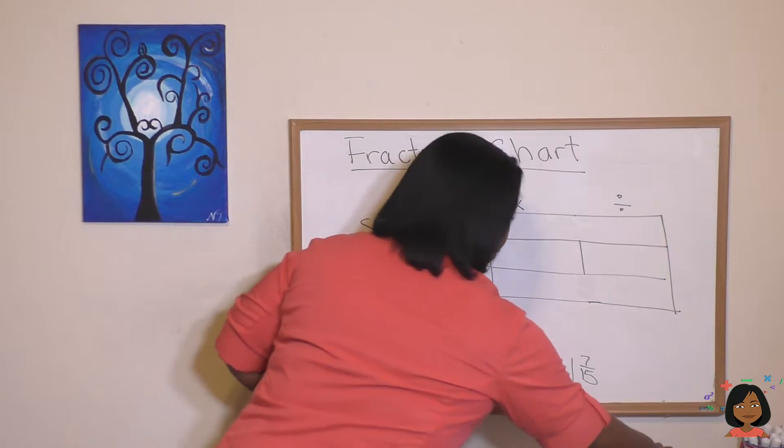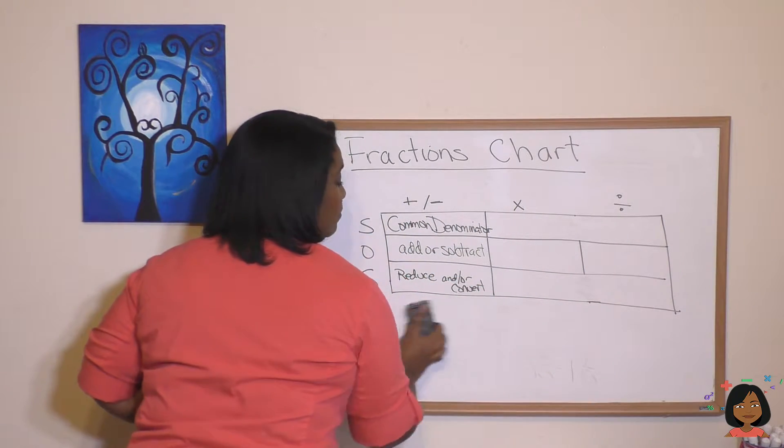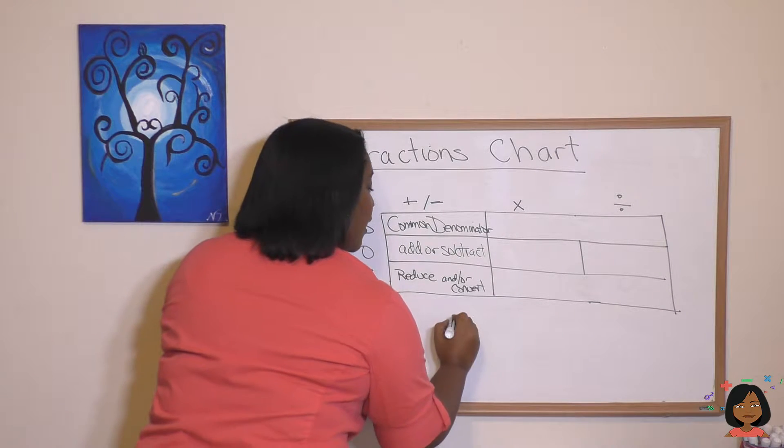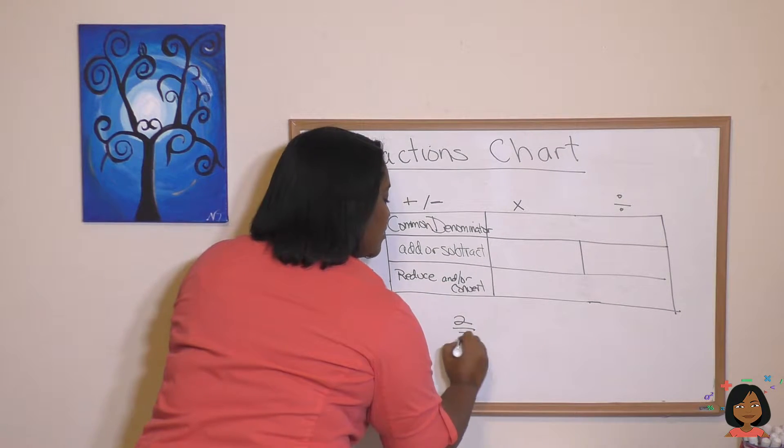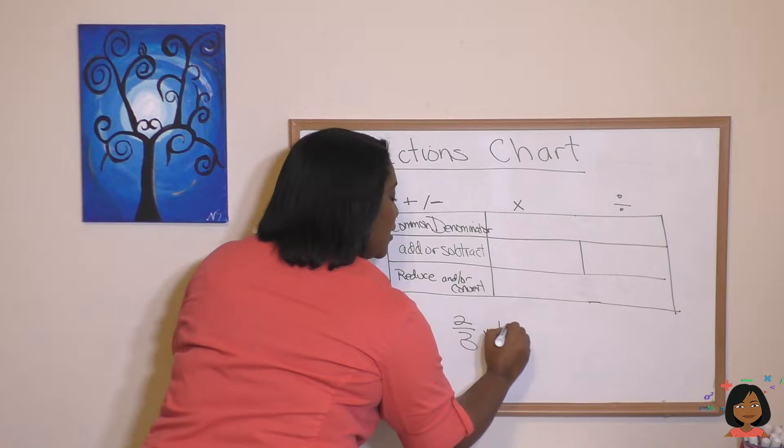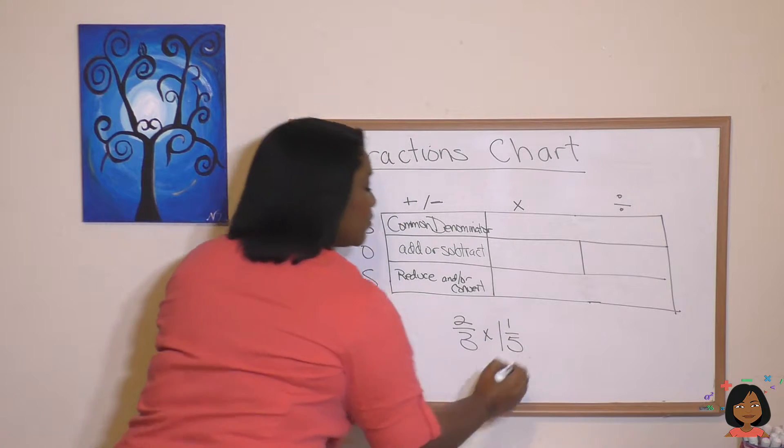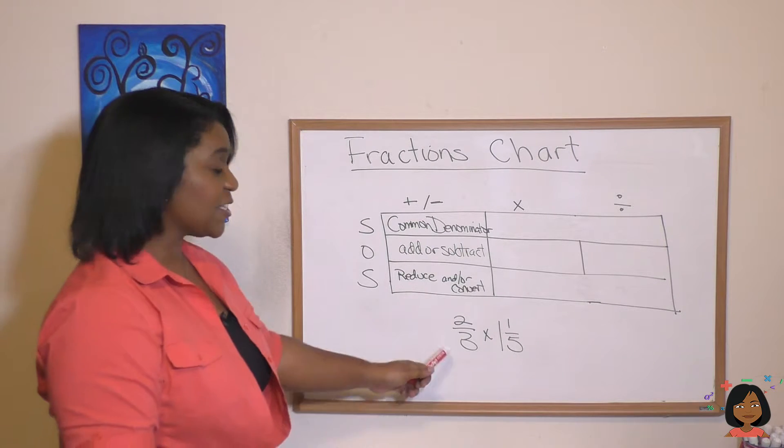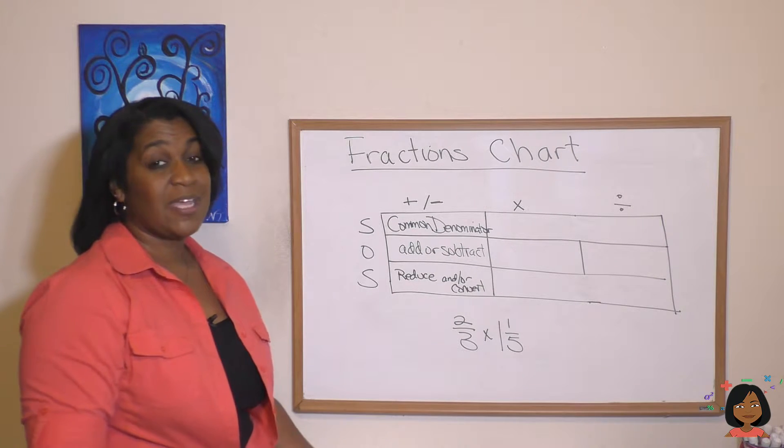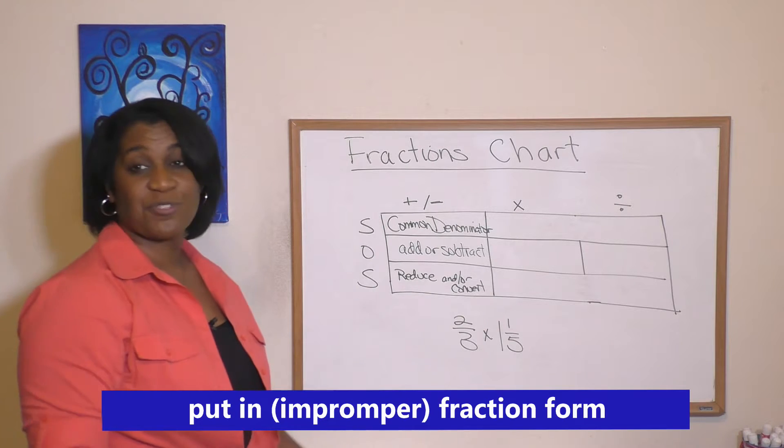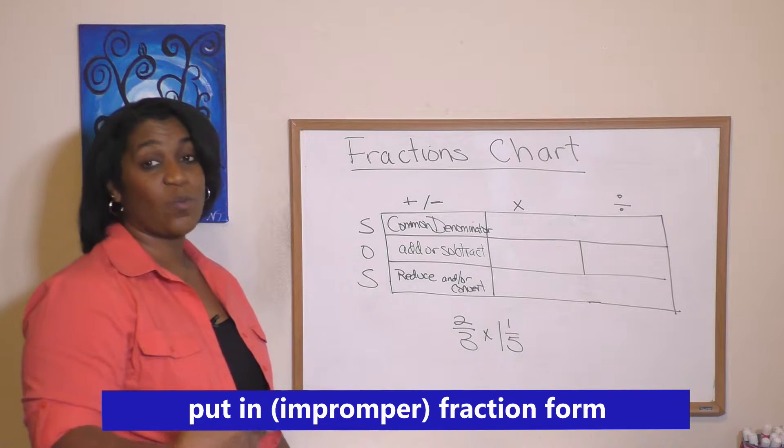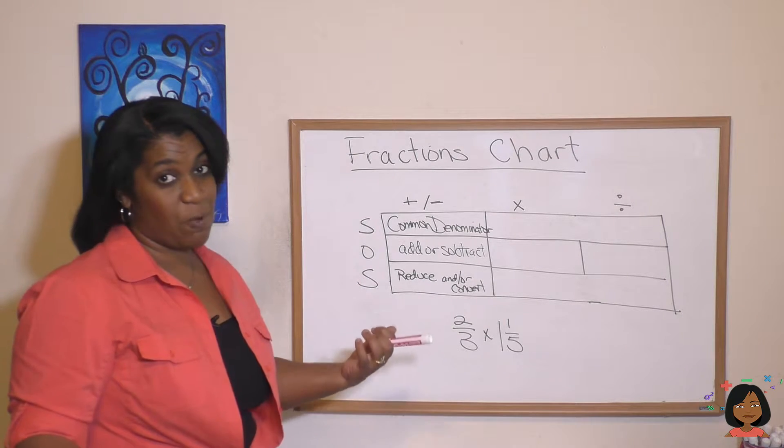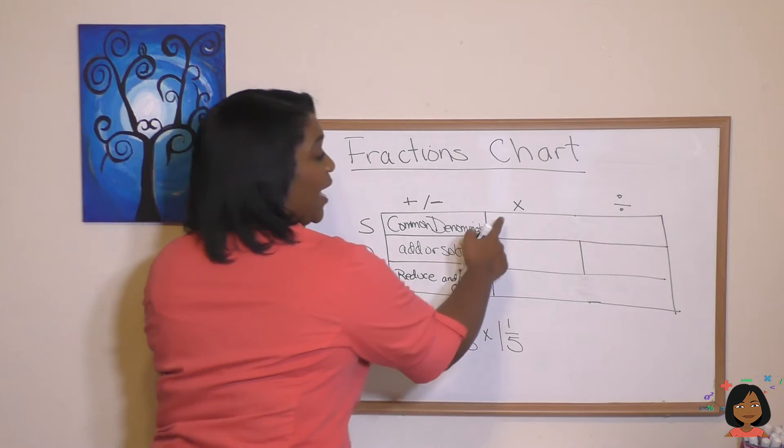Now let's talk about multiplication. Let's say I had something that said 2/3 times 1 and 1/5. What would I have to do to be able to multiply? Well, the first thing I'd have to do is put them in fraction form. 2/3 is fine, but the 1 and 1/5, that mixed number, needs to be turned into an improper fraction. So step one: put it in fraction form.